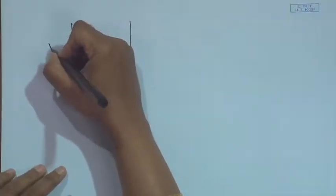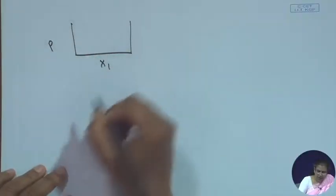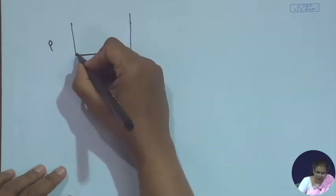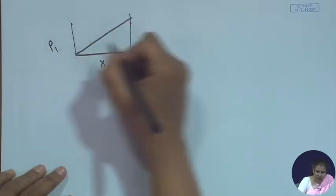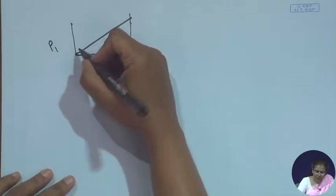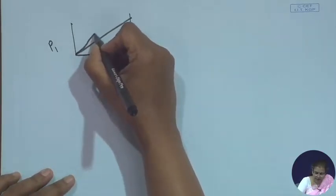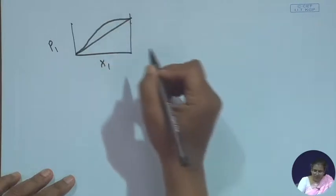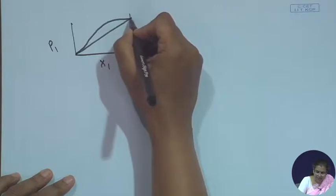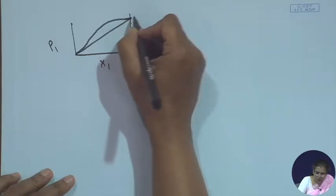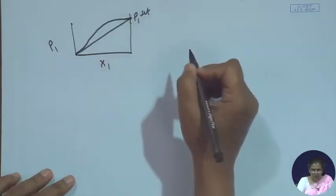What about the ideal dilute solutions? If you remember, we had discussed that if we take a pressure versus x_1 plot for an ideal solution, the plot will be linear — this is the partial pressure p_1 versus x_1. For most cases, we find that when the component is in excess, the slope is almost linear and the intercept is p_1 saturated.